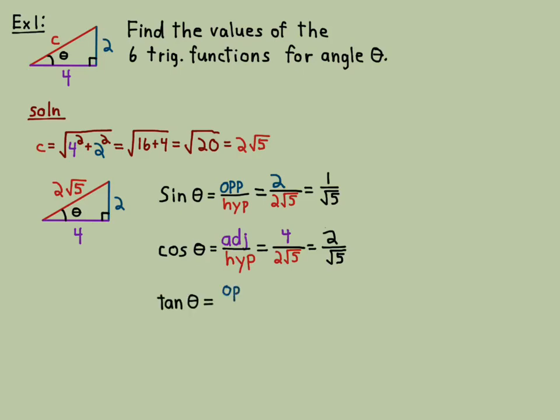Tangent theta is opposite over adjacent, so that's pretty easy to read off the triangle. Opposite over adjacent is 2/4, which is 1/2. You could also take sine over cosine. You'd have to flip the cosine upside down, which is actually the secant, and multiply by √5, so cancel and you get 1/2.